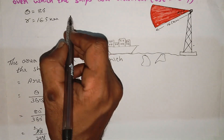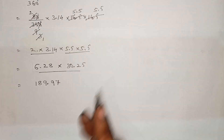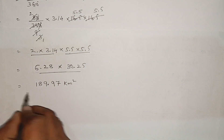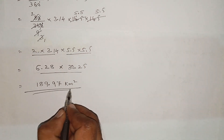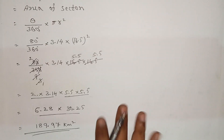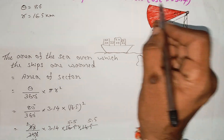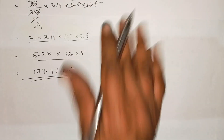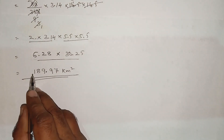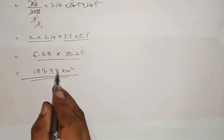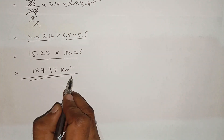So if you have the radius, s² is equal to km². The area of the light spread is equal to 189.97 km².